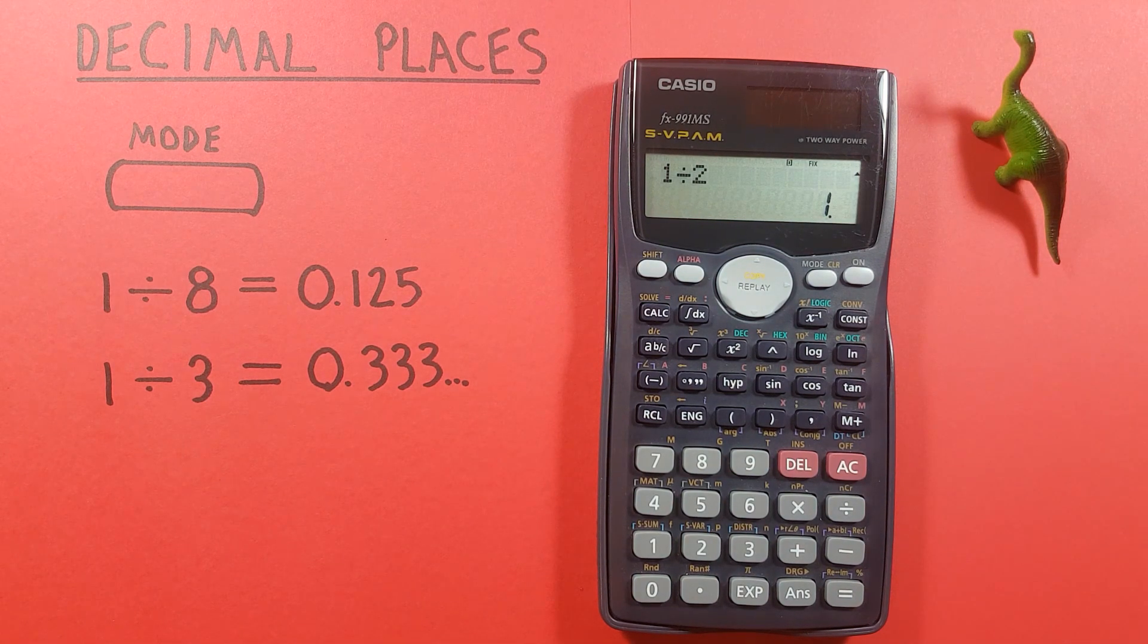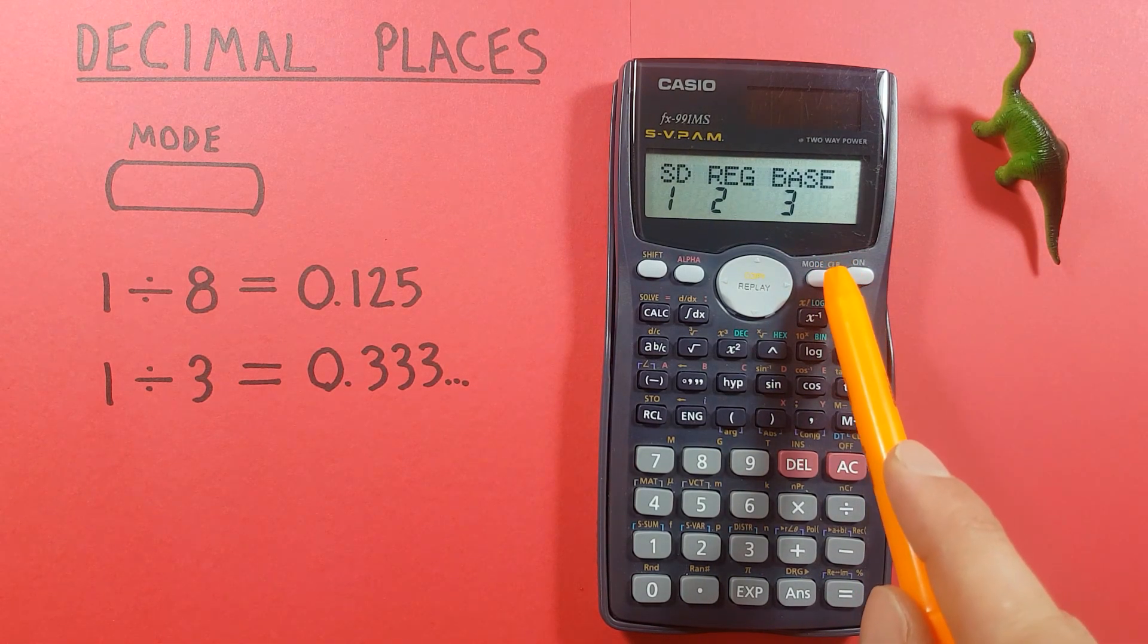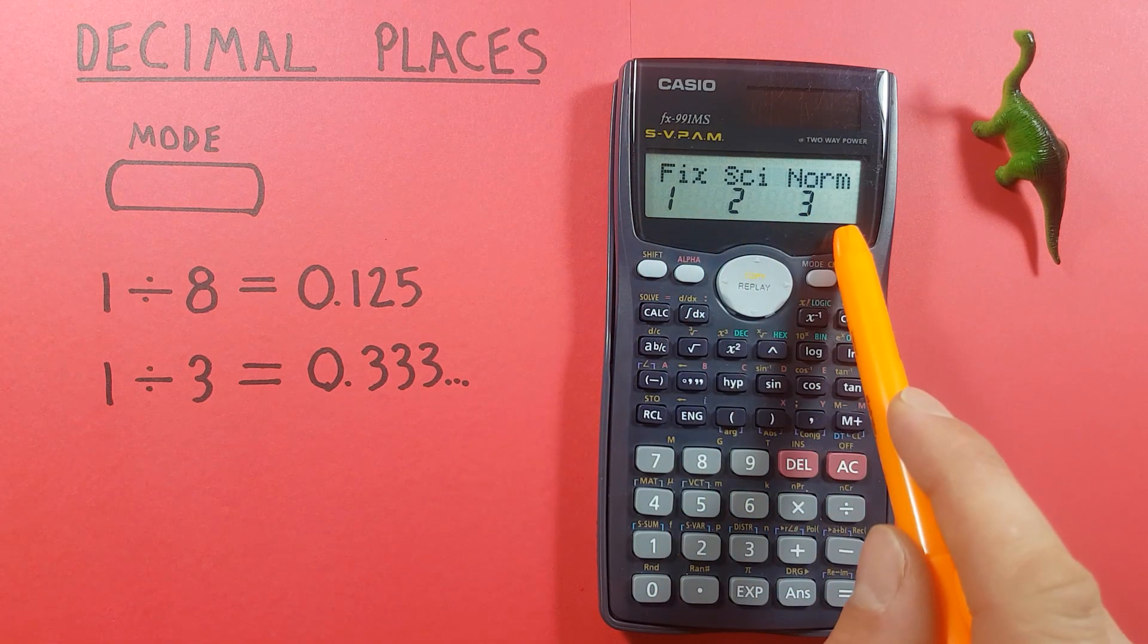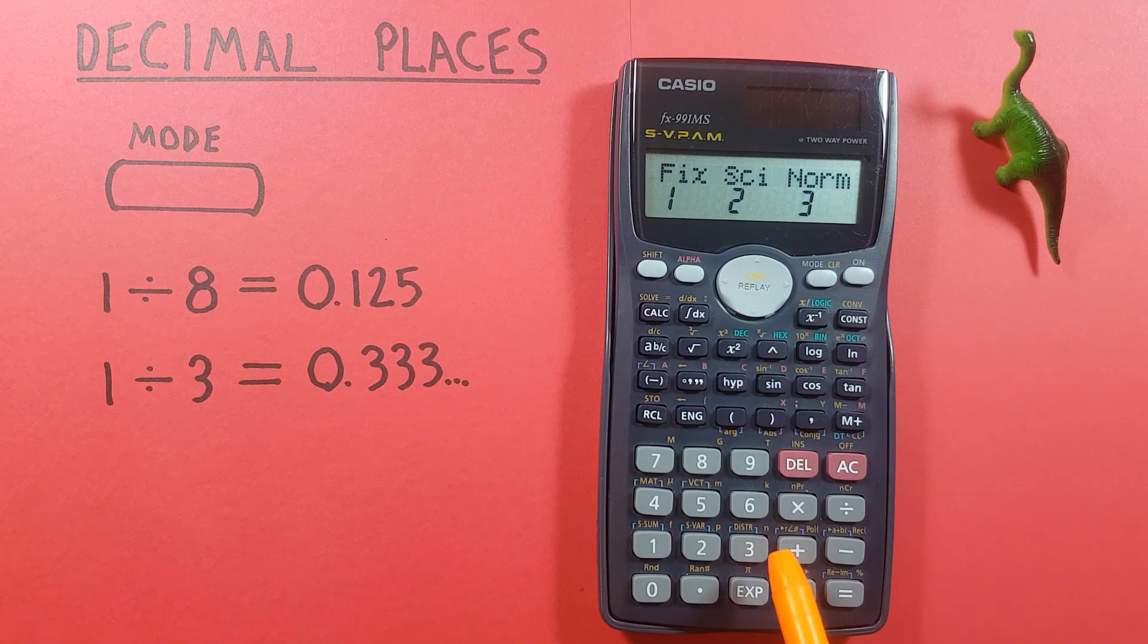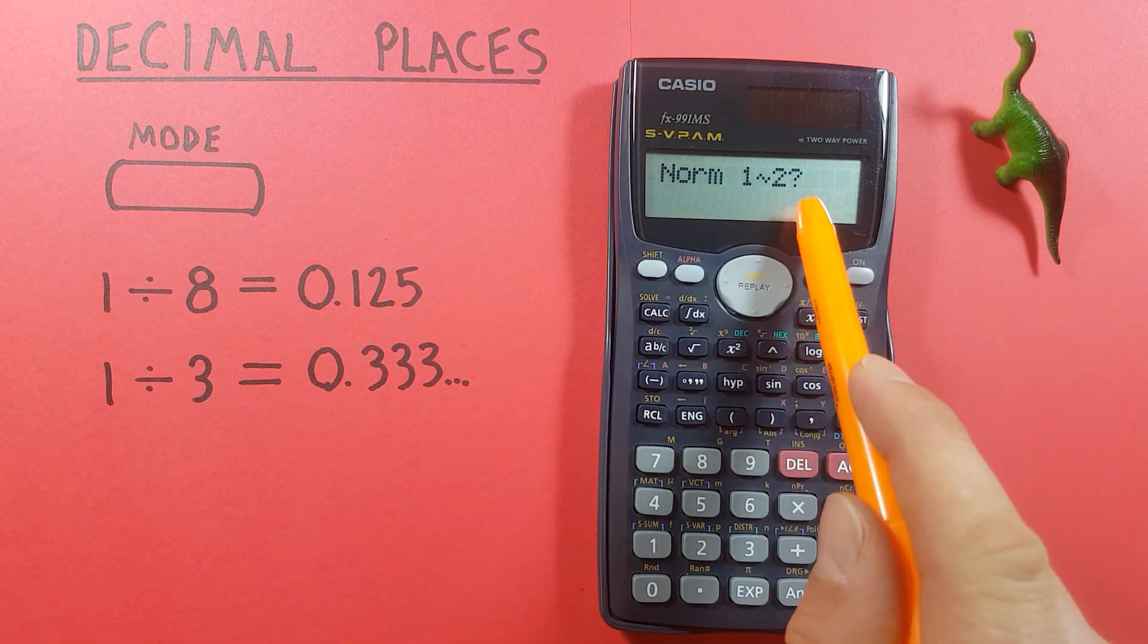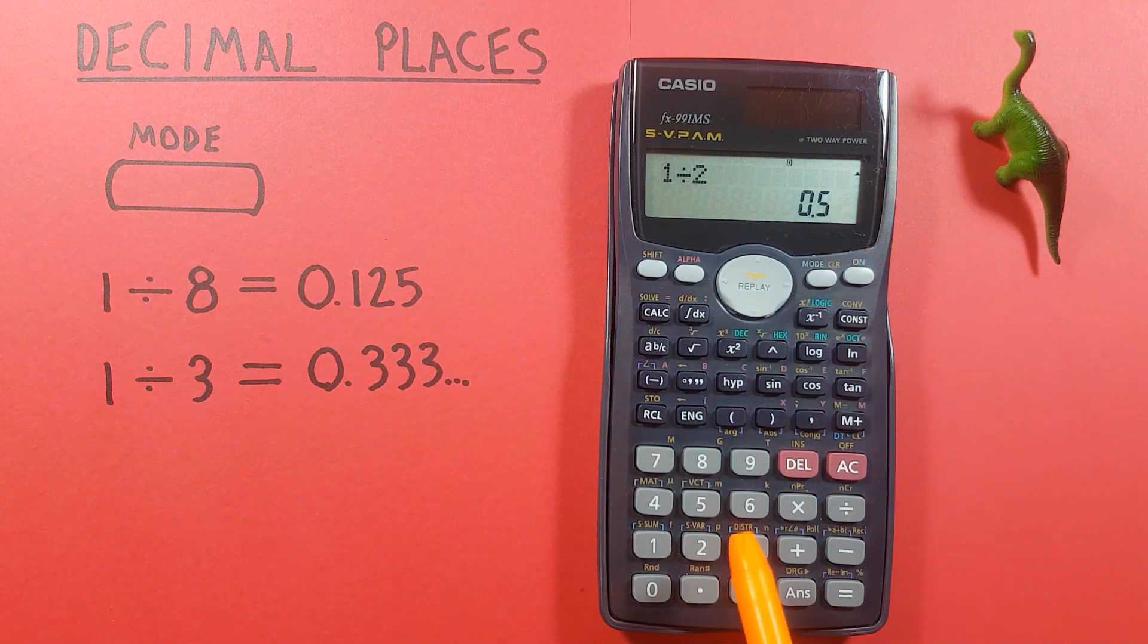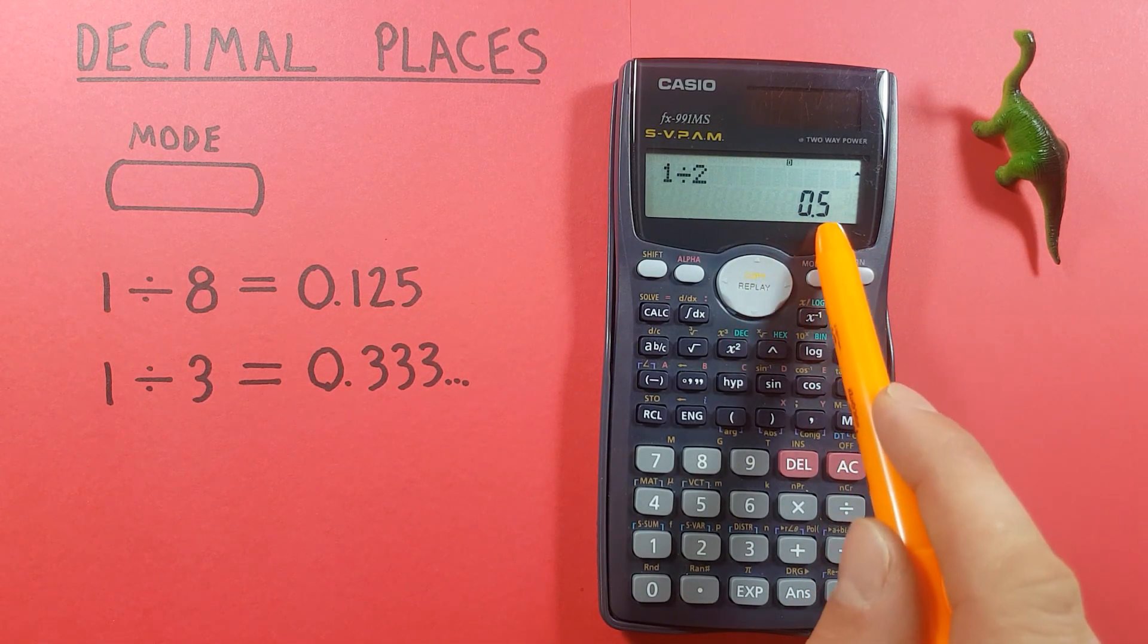Now if we're done with our decimal places we can go back to normal mode by pressing the mode key again. 1, 2, 3, 4, 5 times. So we're back at this screen and we want to select the third option or norm. So we press 3 and it'll ask us norm 1 or norm 2. I would recommend norm 2 in this case. Press it and you see we go back to our floating decimals.